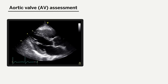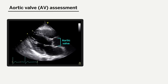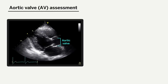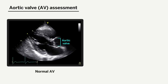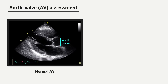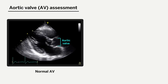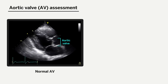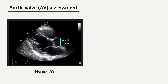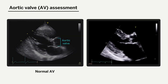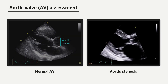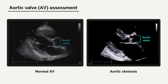The parasternal long axis view is also useful for visually assessing the aortic valve leaflets for sclerosis. Normally, the aortic valve leaflets should appear as thin, pliable leaflets that are freely mobile, as in the video clip on the left. Contrast this to a patient with aortic stenosis, where the leaflets are thick, heavily calcified, and non-mobile, as seen in the video clip on the right.